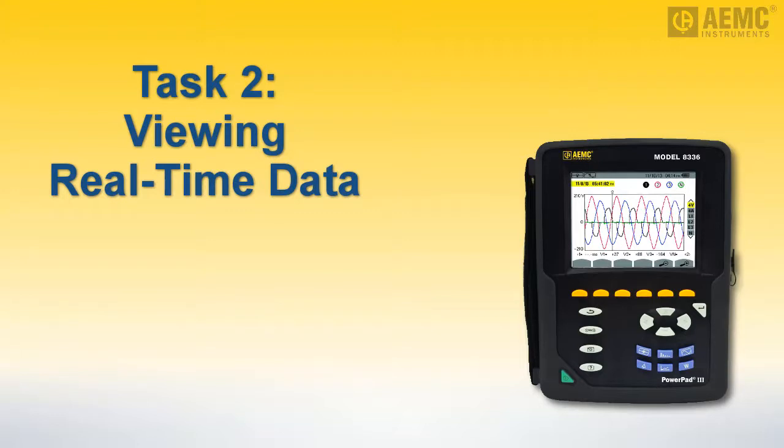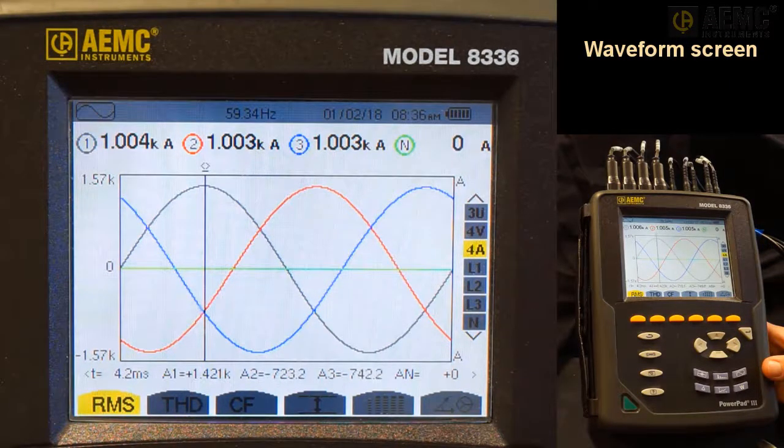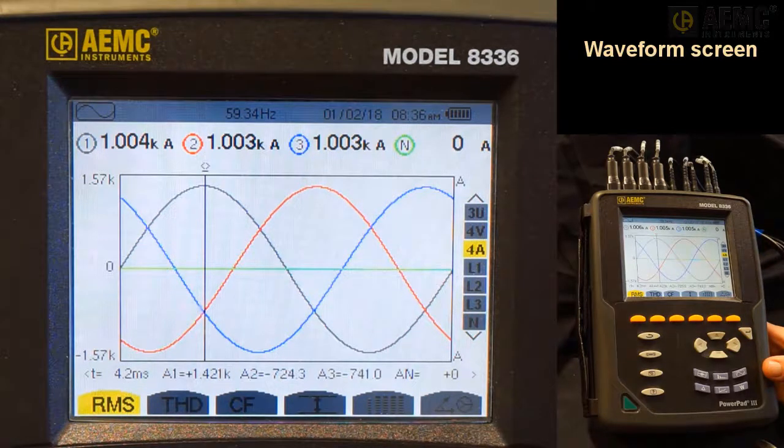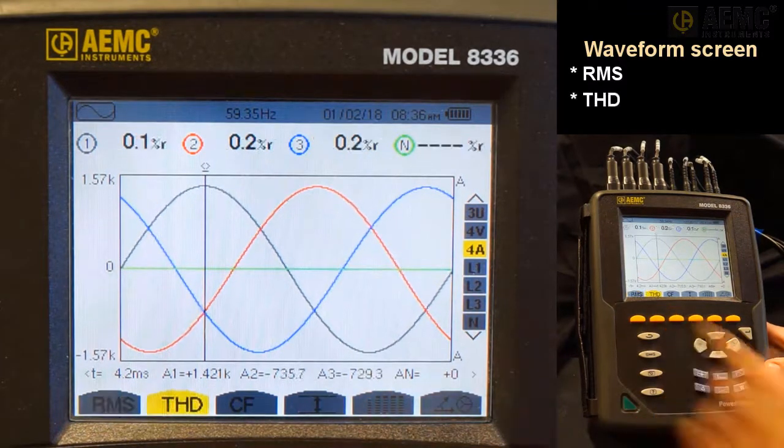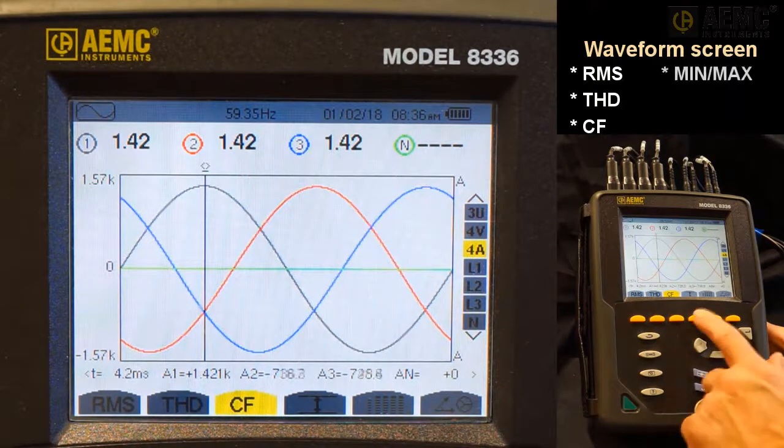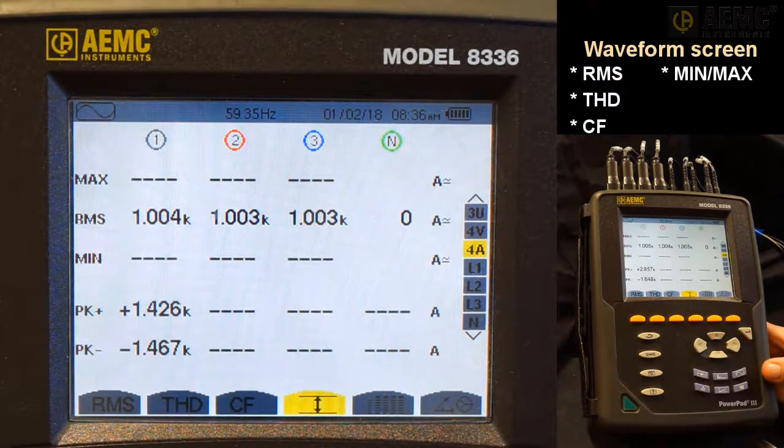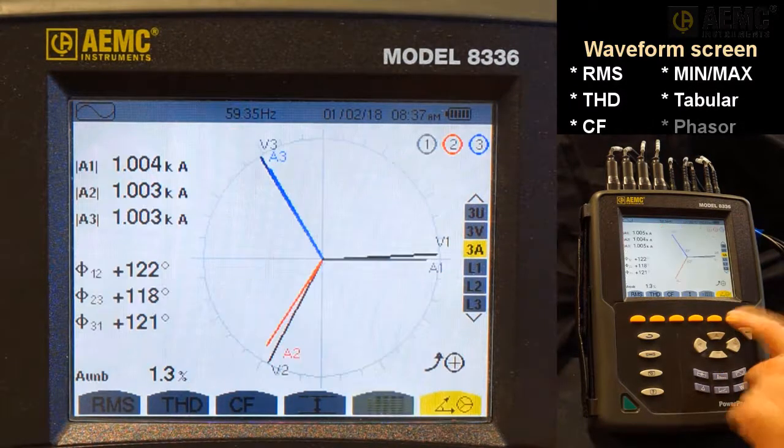With the Model 8336 configured and connected to a hookup, or in our case, a hookup simulation, we can now view measurement data in real time. For instance, the default display screen that appears when you first power on the Model 8336 is the waveform screen. This screen includes its own set of function button icons for displaying true RMS values, total harmonic distortion calculations, crest factor values, minimum, maximum, RMS, and peak values, a variety of measurements in tabular format, and a real-time phasor diagram.